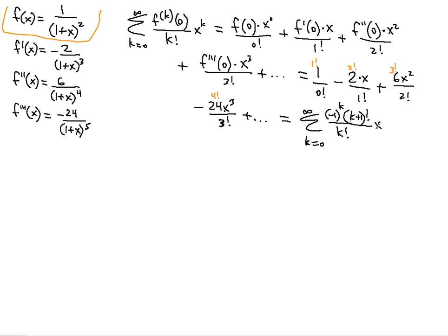Now let's take care of the x. x is easy because the x power matches exactly the number in the factorial in the denominator: 3 and 3, 2 and 2, 1 and 1. So it's just x to the k. But we're not done yet, because we have to simplify. Notice we can factor out the k plus 1, and the k factorial will cancel with the k factorial in the denominator. So we're left with negative 1 to the k times k plus 1 times x to the k.